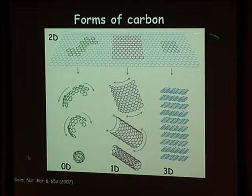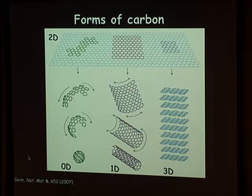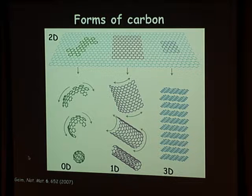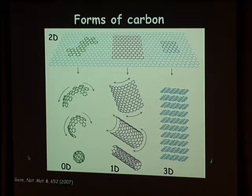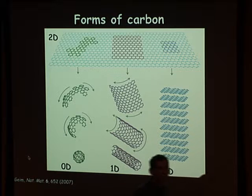If you take graphite, you can turn it into a two-dimensional form — just one plane — and that's graphene. You can also take this two-dimensional sheet and roll it up into a carbon nanotube, or roll it up into a little ball and make a zero-dimensional material, a buckyball. Today I want to concentrate on these two-dimensional forms and talk about the new physics, new electronic properties, and new optical properties we get when we go down to a single two-dimensional crystal.